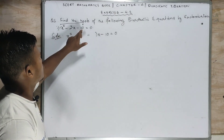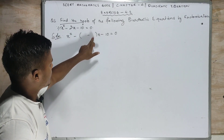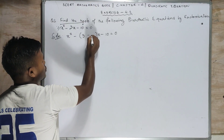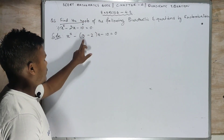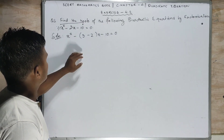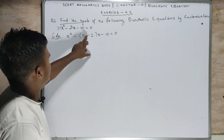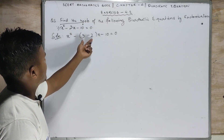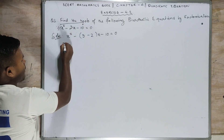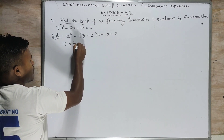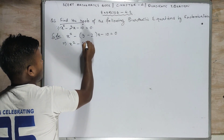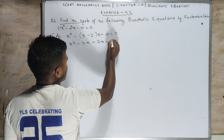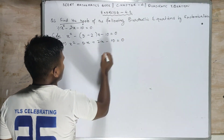Now think of two numbers whose product is 10 — because 1 into 10 is 10 — and whose difference gives you the middle coefficient. If you take 5 and 2: 5 into 2 is 10, and 5 minus 2 is 3, which matches the coefficient of x. So on the next step: x squared minus 5x plus 2x minus 10 is equal to 0.